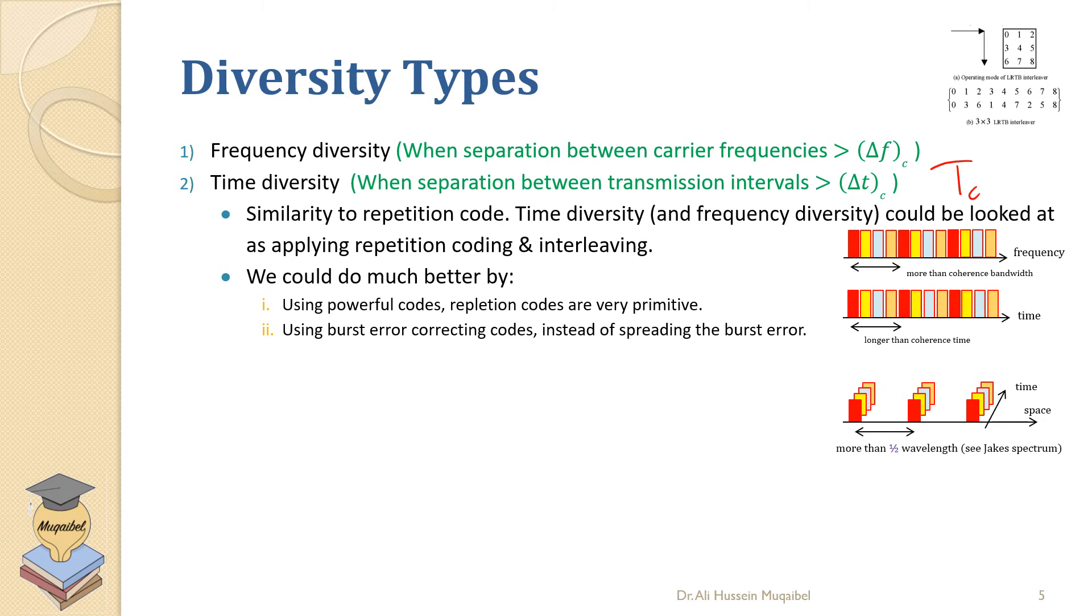Time diversity and frequency diversity could be related to coding and interleaving. Interleaving is where we scramble the bits and rearrange them. We could do much better by doing much more powerful codes other than repetition codes, because repetition codes are so primitive.